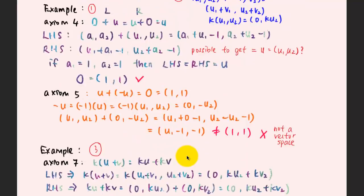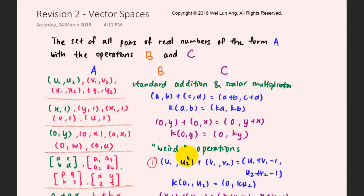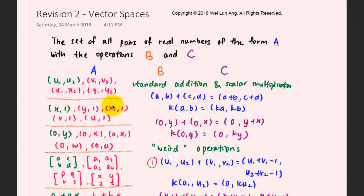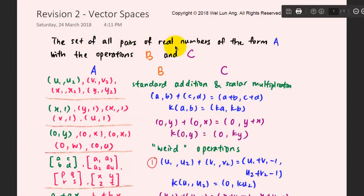This group of vectors u1, u2, v1, v2 does not form a vector space because one of the axioms is violated. I hope that the determination of whether a group of vectors forms a vector space or not is helpful, and this video improves your understanding of how to check whether a set of pairs of members forms a vector space or not. Thank you.